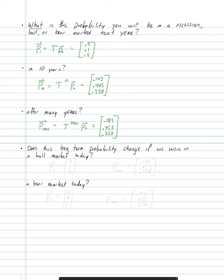The next bullet asks whether the long-term probability changes if we start in a bull market today. If we were in a bull market this year, the only thing that changes is the initial probability vector: instead of [1, 0, 0], we now define it as [0, 1, 0]. Performing the same operations to find p of 1,000 with this new initial condition, we come to the same answer.